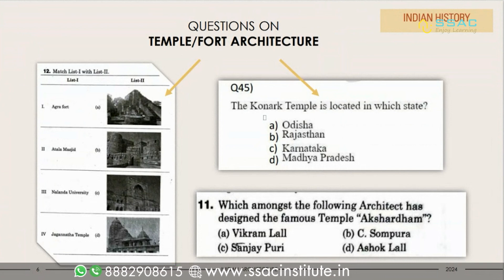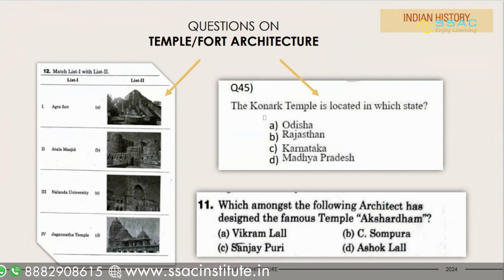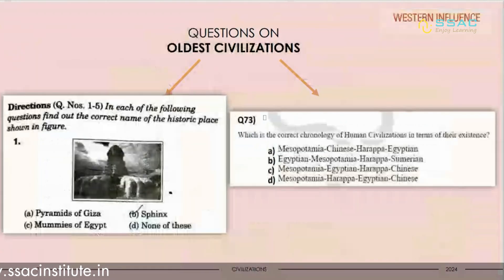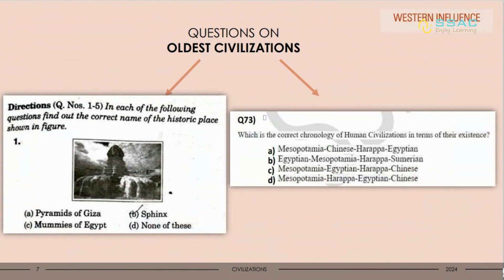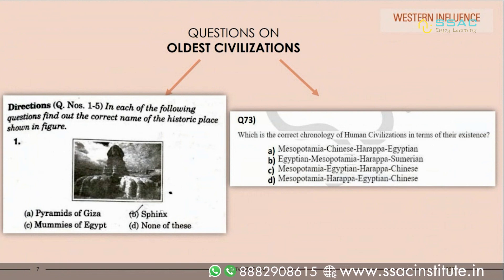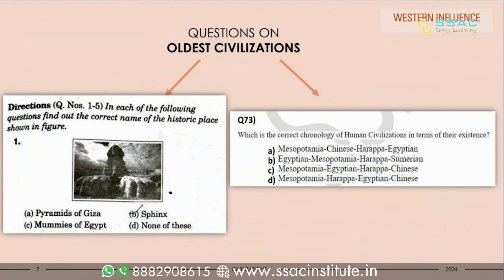Next is temple and fort architecture. Again, picture-based questions can be asked about the location of these temples or famous forts, who designed them, and famous architects related to temple architecture. Next are questions on oldest civilizations — the correct chronological order of human civilizations has been asked, as well as questions about particular civilizations like Indus Valley Civilization and Ancient Egypt.